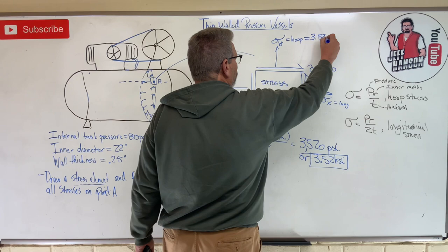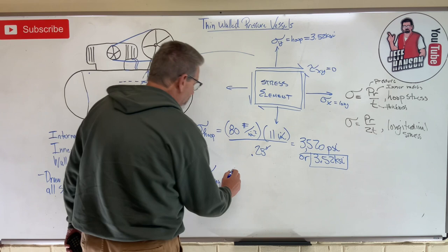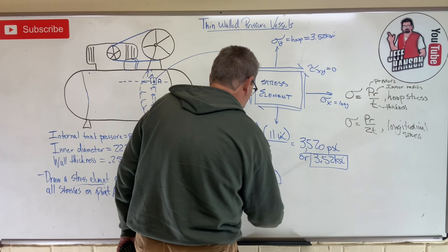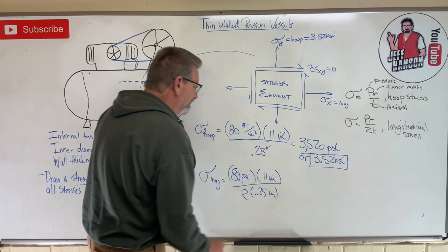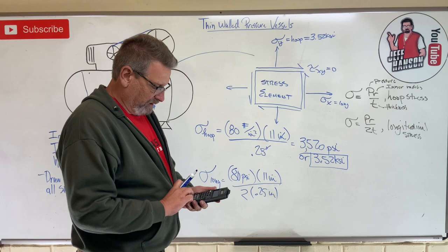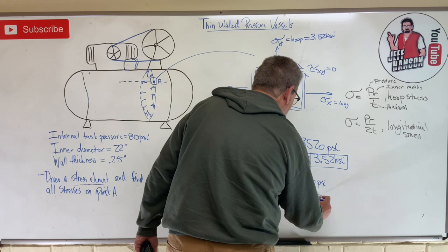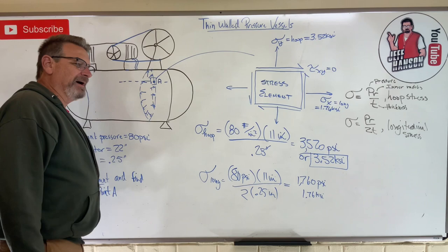Now what about longitudinal stress? So sigma longitudinal equals, is anything different? Same pressure, 80 psi, same ID, 11 inches, and then same thickness, 0.25 inches, except we've got a 2 there, don't we? What is that 2 going to do? It's going to give me the exact same answer as that except divided by 2. So I can just go divide by 2, which equals 1760 psi or 1.76 ksi. So that's this guy over here, 1.76 ksi.